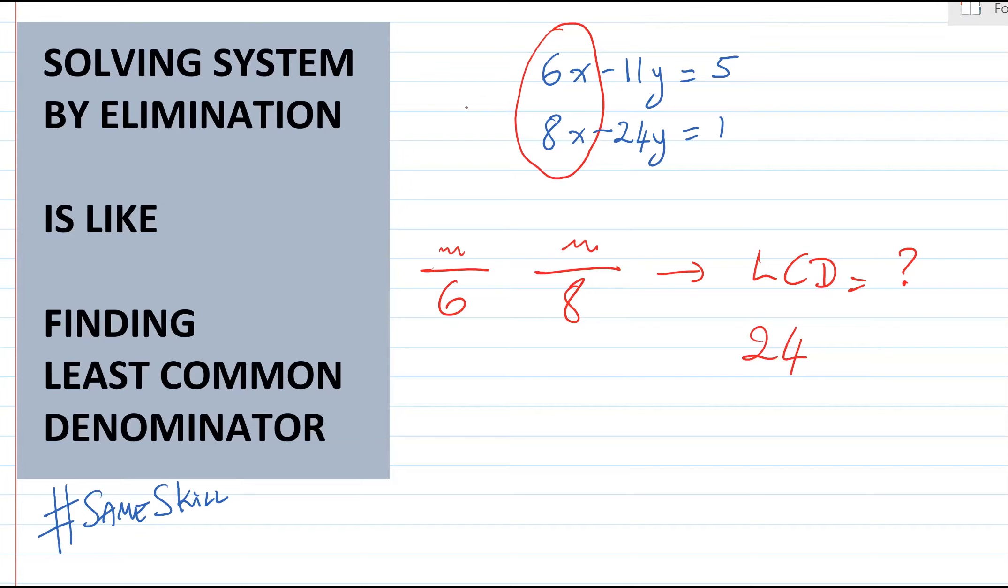So same with this system here. You have a 6x and an 8x. You should make them both into 24x. One positive and the other negative.